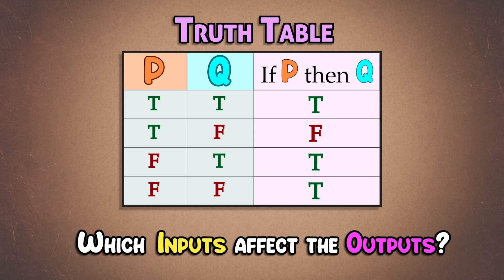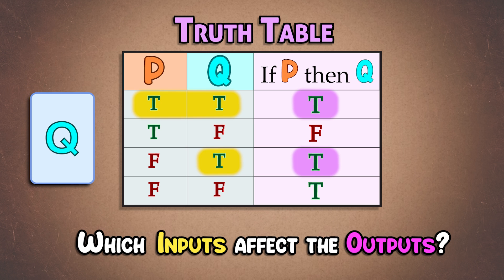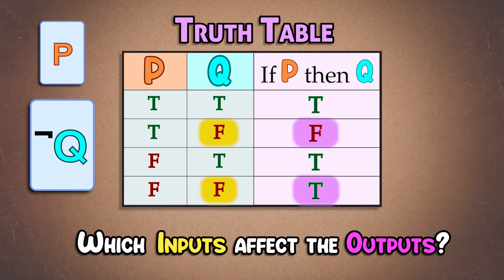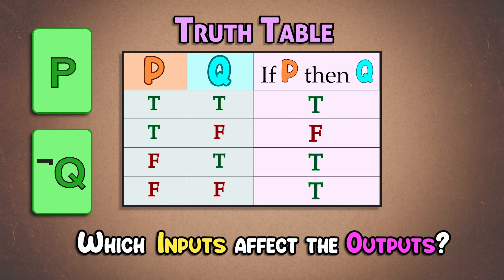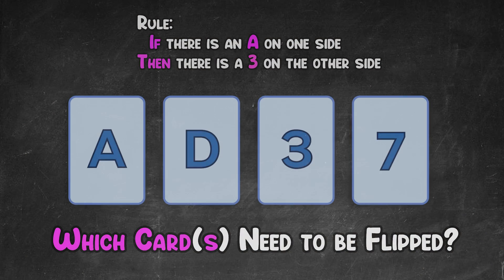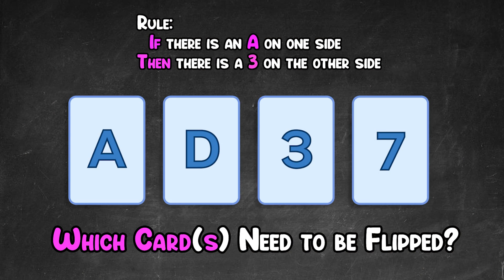Using the truth table, we can see that as long as we have Q, our rule P then Q is true, regardless of P or not P. Likewise, as long as we have not P, our rule is true, regardless of the value of Q. The only cases that possibly matter is if we have a P or if we have a not Q. Therefore, those are the only cards we need to flip over. In other words, the answer to the first problem is you have to flip over the A card and the 7 card.